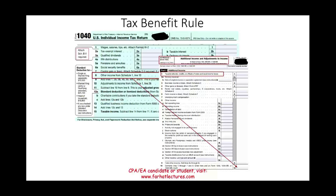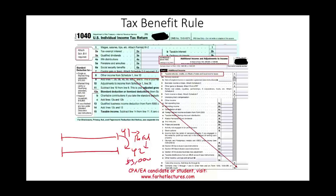When do you receive a refund? Let's assume you filed your taxes in year one, and as a result you have a refund that you did not receive until year two. In year two you received the refund — let's assume this refund is $3,000. The question is: do you include this refund in your year-two taxes, since you overpaid in year one and now received that money back? Is it taxable?